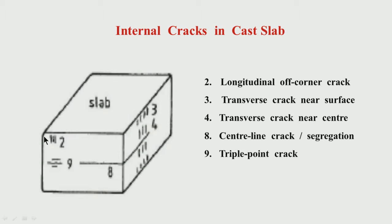If you have a crack near the corner with a trace there, it would be an internal longitudinal corner crack. Number 2 is basically the longitudinal off-corner crack. So if it is a longitudinal crack near the corner we can call it a longitudinal corner crack.